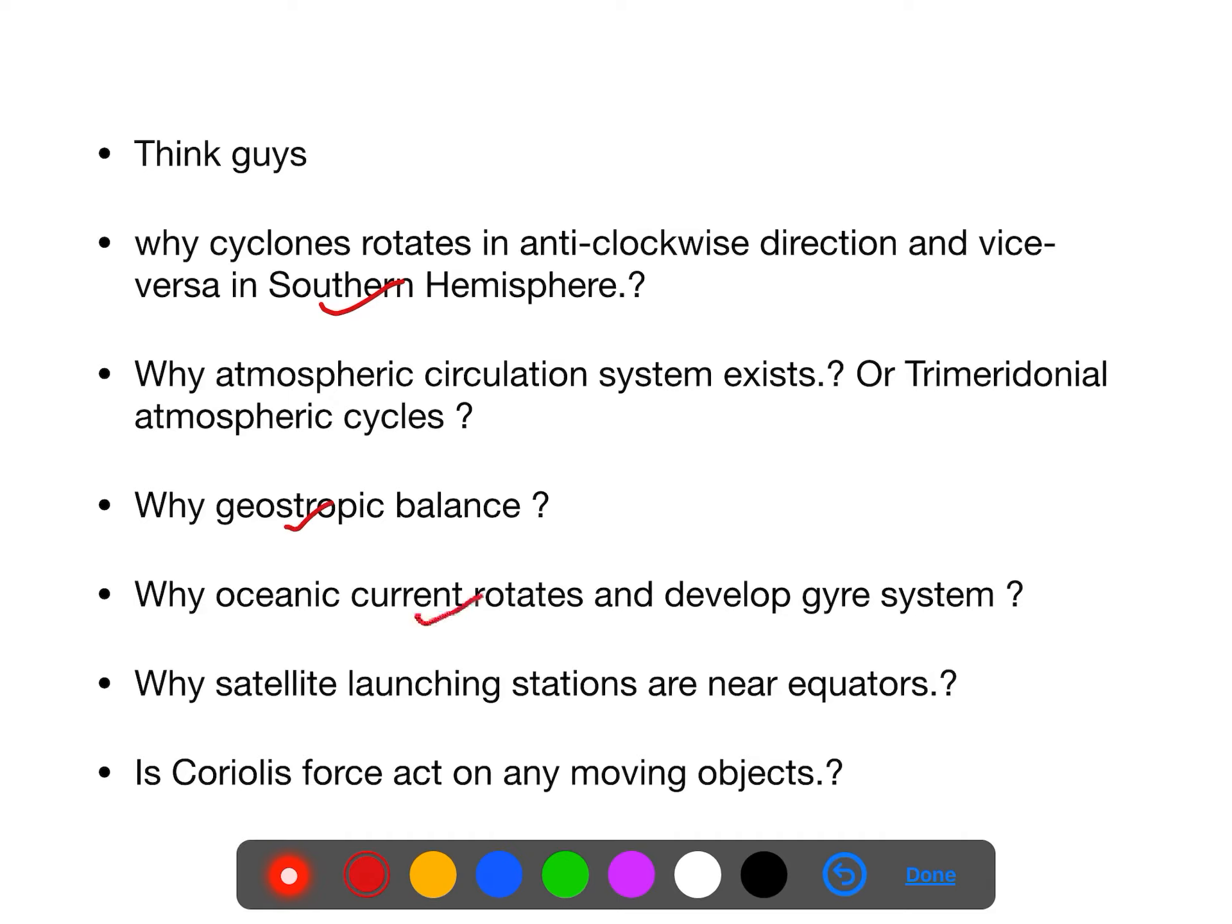Why the oceanic currents rotate and the rotating sea surface current system called gyre system, and the direction of the gyre system rotation is opposite in opposite hemisphere?